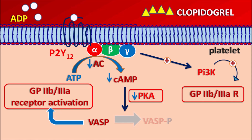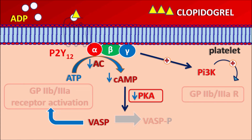Clopidogrel acts as an antagonist at the P2Y12 receptors. It binds to these ADP receptors, thereby inhibiting ADP activity, resulting in decreased activation of GP2B/3A receptors. When these receptors are not activated, platelets cannot be aggregated, so platelet aggregation is inhibited.